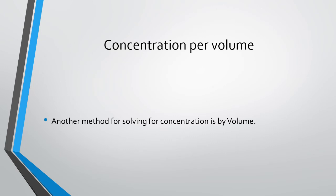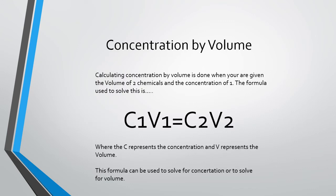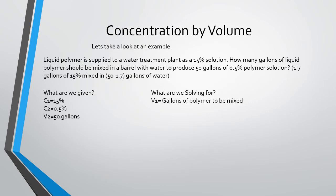Another way to solve for concentration is by volume, using the formula C1V1 = C2V2, where C represents concentration and V represents volume. This formula can be used to solve for either concentration or volume. For example: a liquid polymer is supplied at 15% solution. How many gallons should be mixed with water to produce 50 gallons of 0.5% polymer solution? The answer is 1.7 gallons.